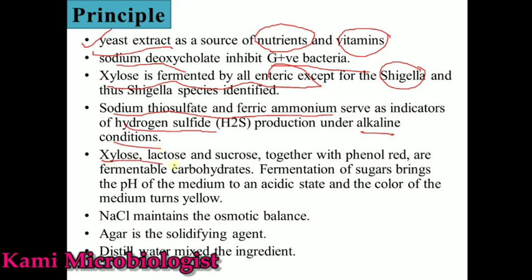Then we have xylose, lactose, and sucrose — these are carbohydrates. When these carbohydrates are fermented, acid is produced, which causes the phenol red indicator to turn yellow. NaCl maintains osmotic balance — it allows cells to take up nutrients from outside and release harmful materials. Agar acts as a solidifying agent, providing a stable surface for bacteria to produce colonies.